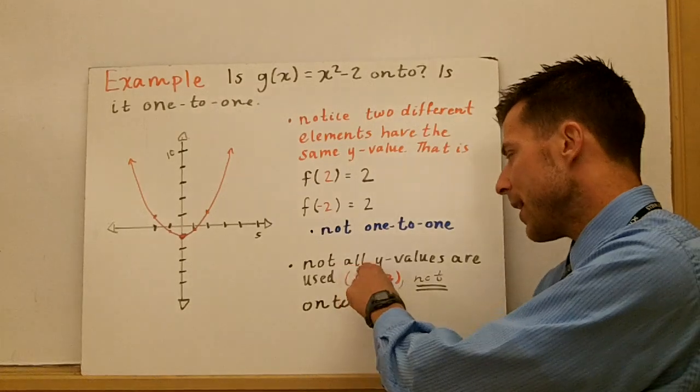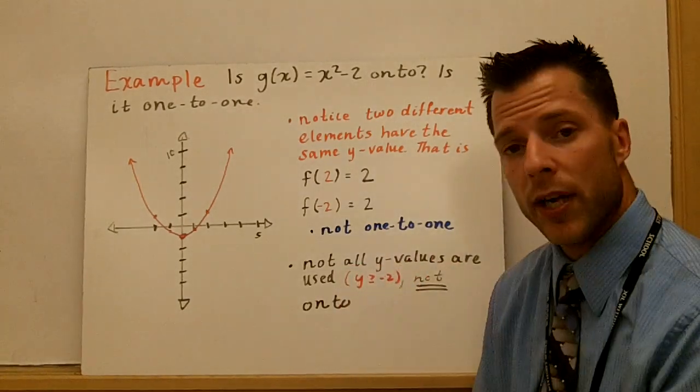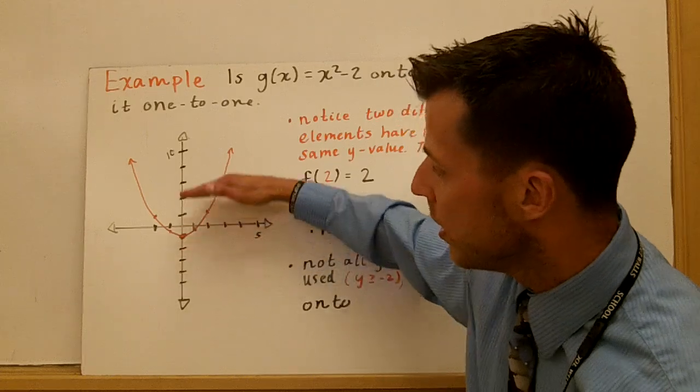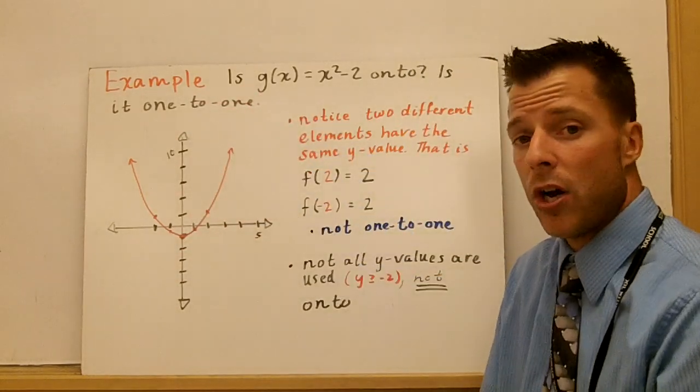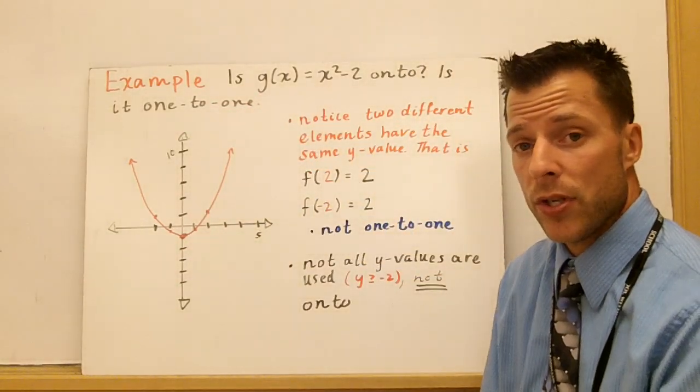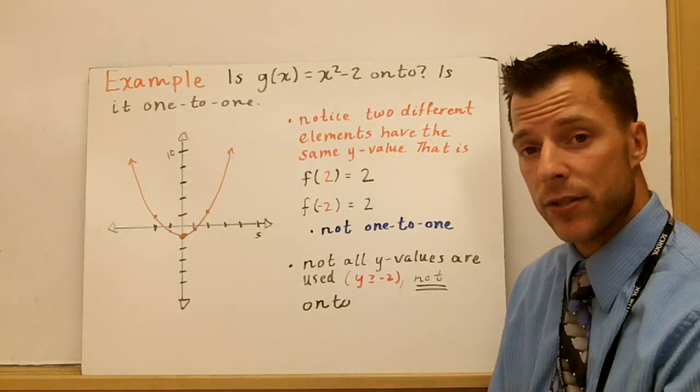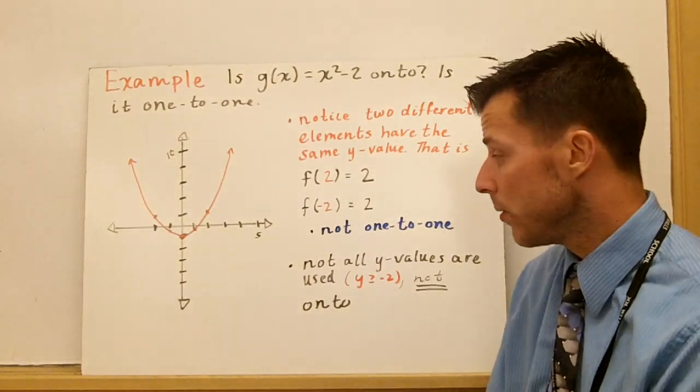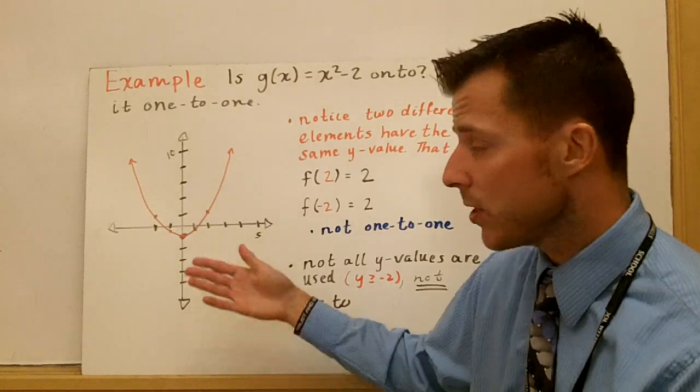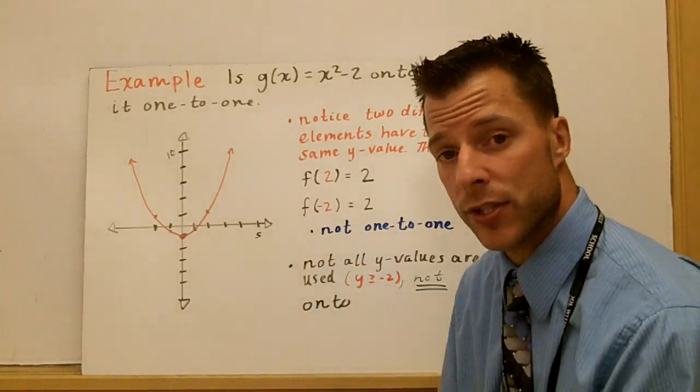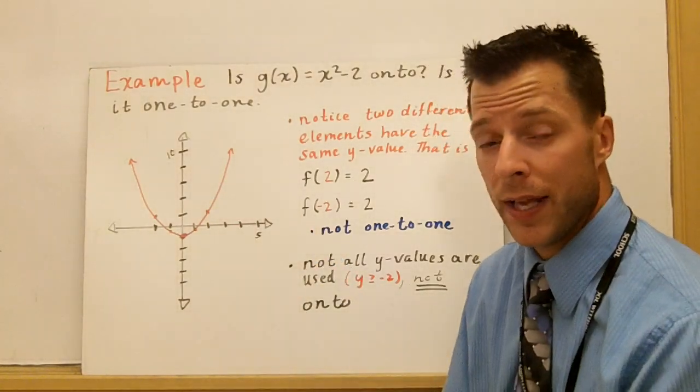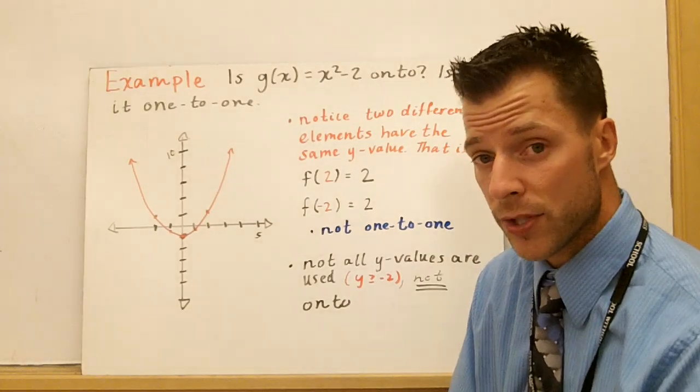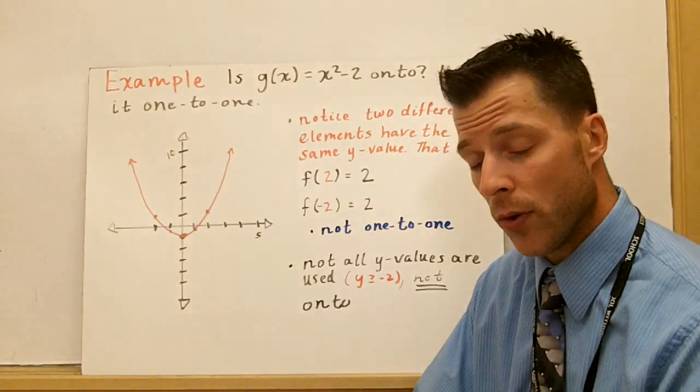So not all y values are being used here. Think about the range. You're going from negative 2 to infinity on the range. All y values aren't being used. So this function is not onto. So it's neither. So you can pretty much guarantee that quadratic functions are not going to be one-to-one. Linear functions are always going to be bijections. They're going to be both one-to-one and onto.